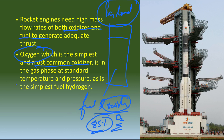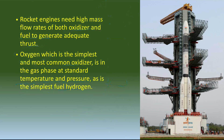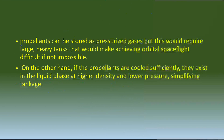Oxygen is the most common oxidizer. Agar hum normal temperature and pressure ki baat karayen, toh ye gaseous state mein hai. Isi tarah joh fuel hai hydrogen, wo bhi gaseous state mein hota hai at normal temperature and pressure. Lekin agar hum usko liquefied karte hain toh hum usko liquefied state mein store kar sakte hain, jo bahut beneficial ho sakta hai. Jab yeh fuel liquefied honga, tab woh kam space occupy karega kyunki iski density bad jayegi aur volume kam ho jayega. Propellants can be stored as pressurized gases, but that would require large heavy tanks, making orbital space flight very difficult if not impossible. On the other hand, if we convert them into liquid state at higher density and lower pressure, their carrying capacity can be improved to a large extent.